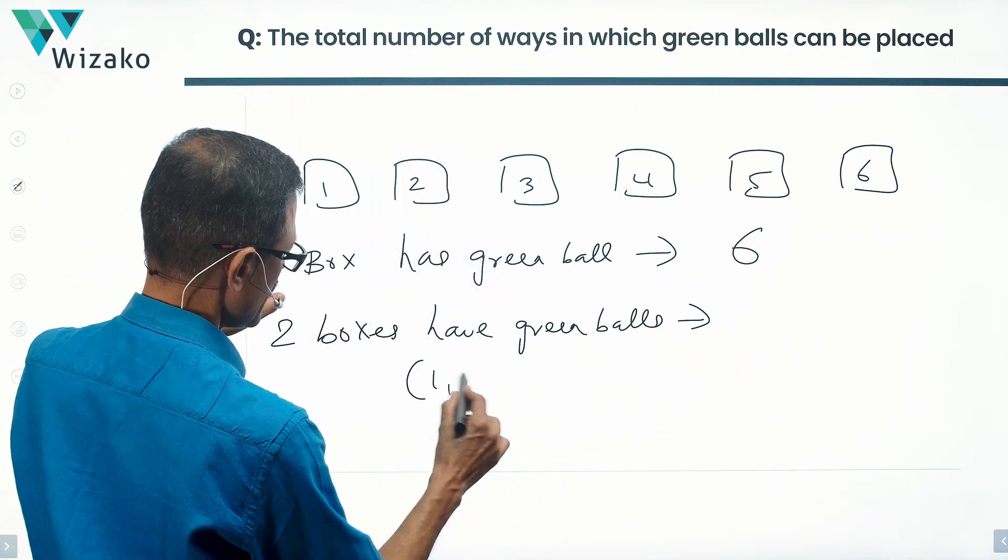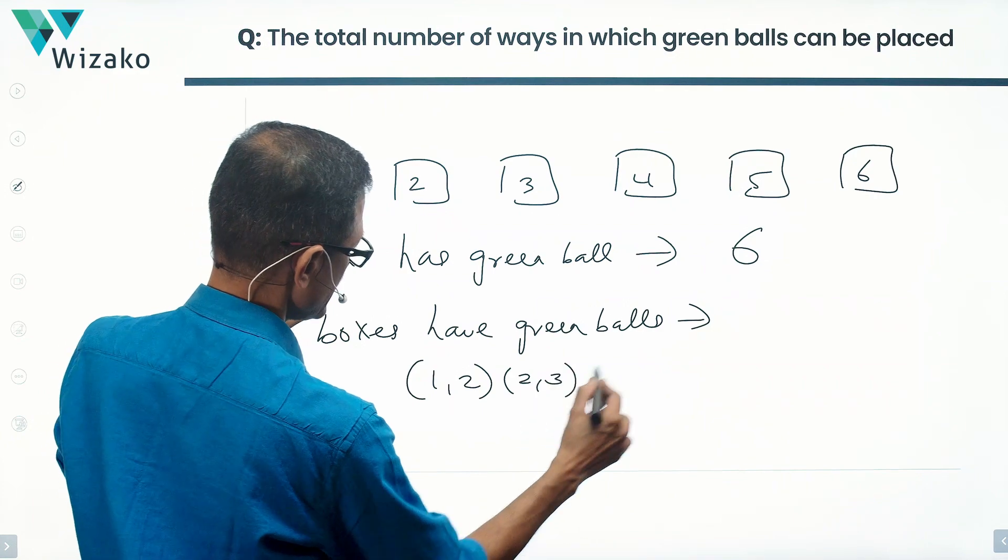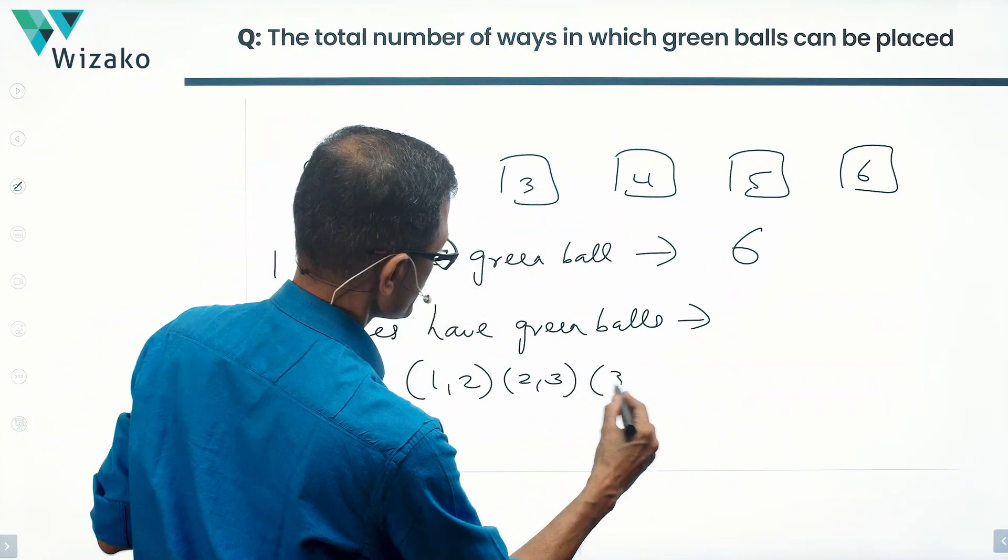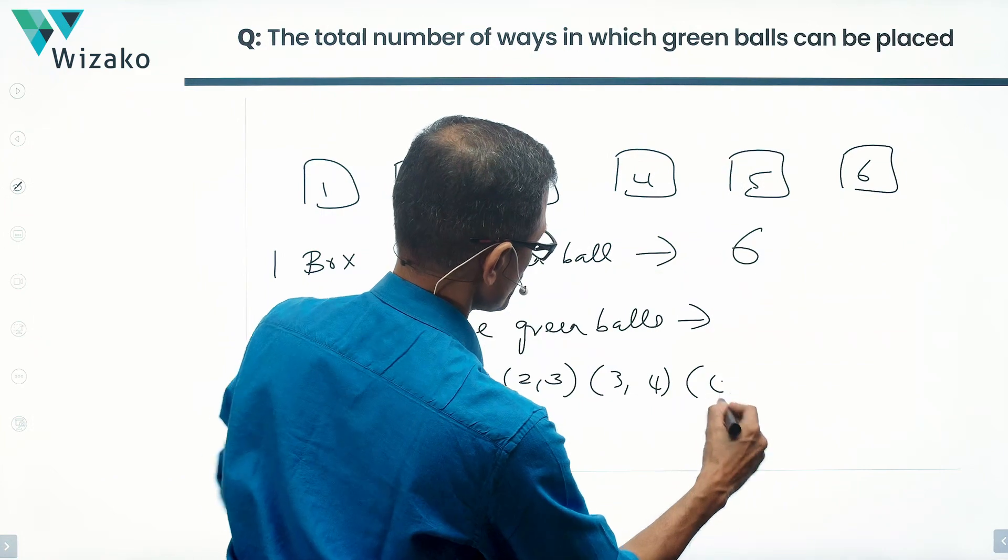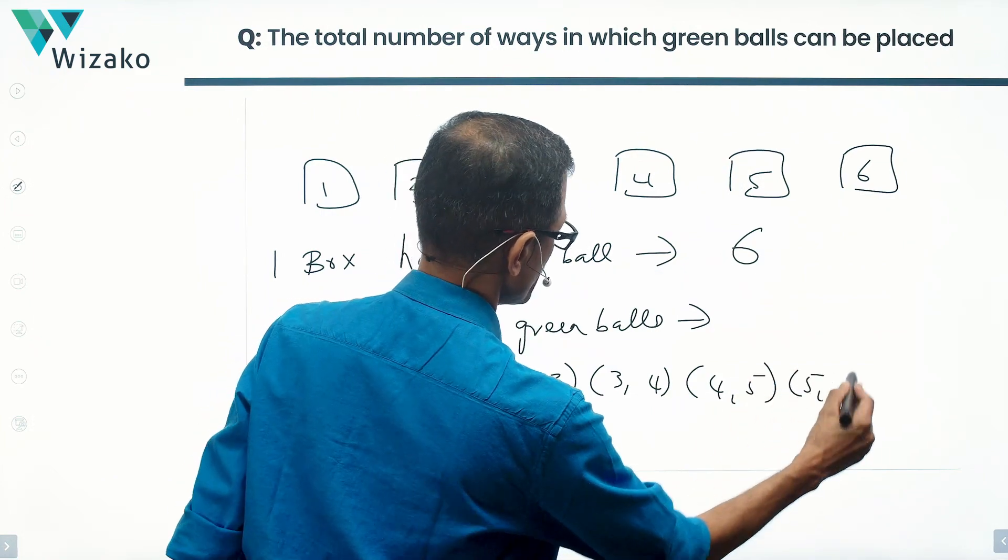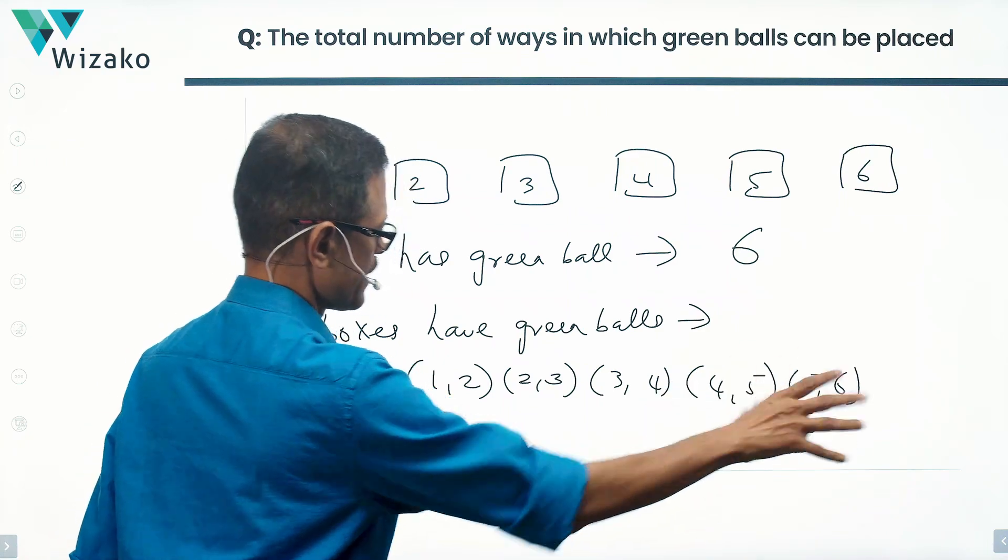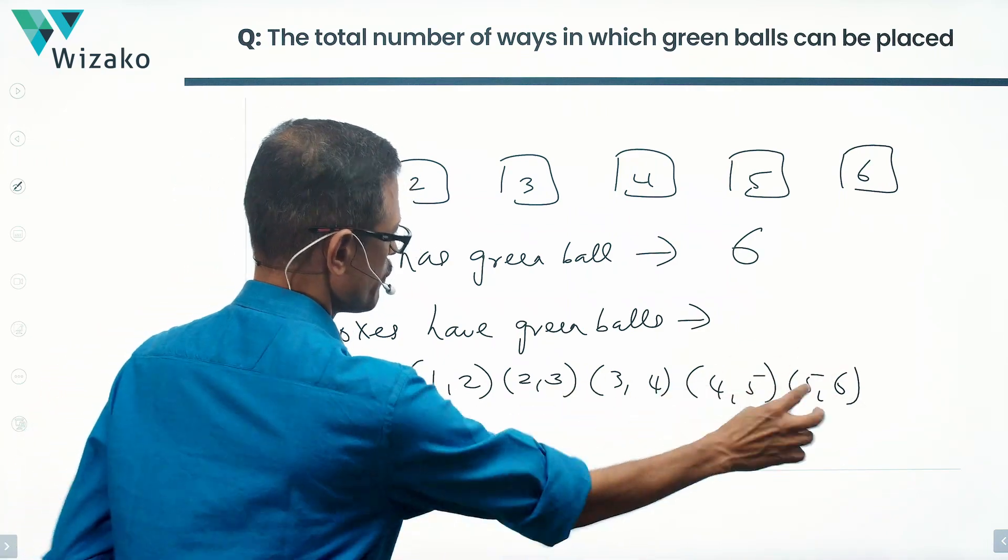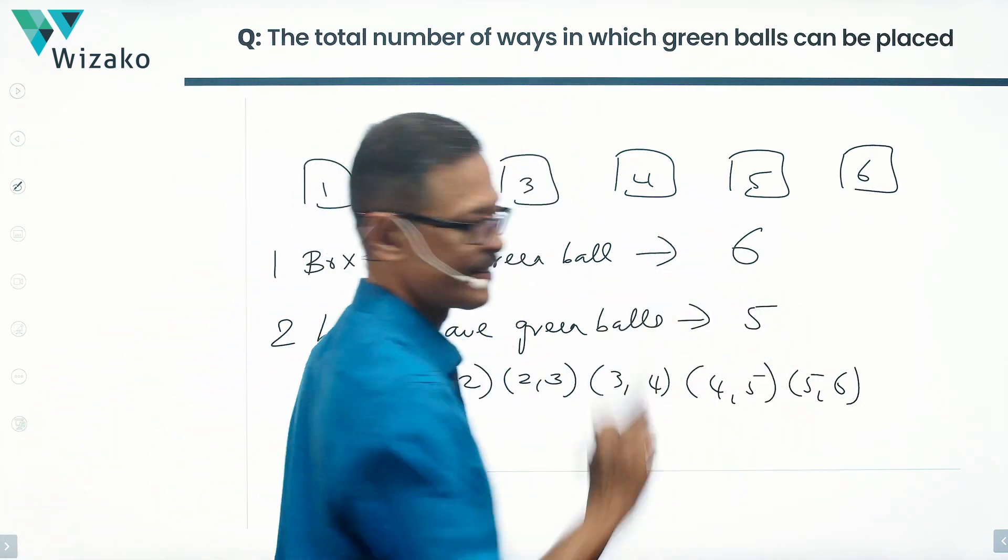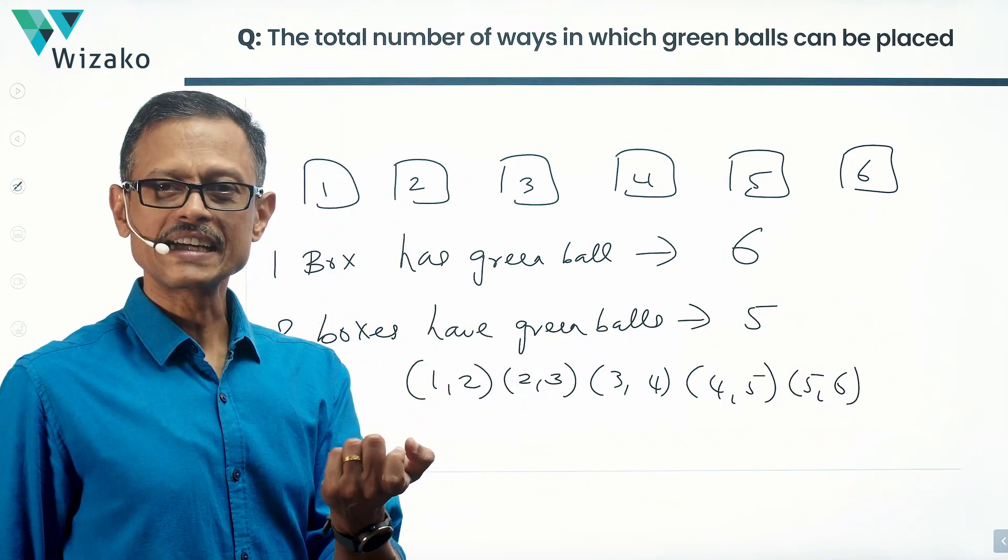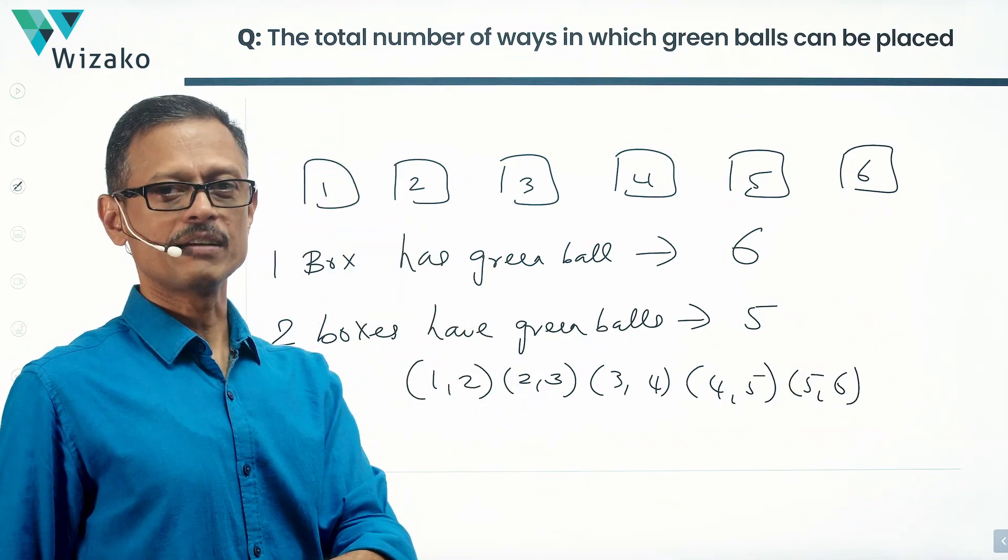So what are the consecutive ones which are possible? Let's list them down again. 1, 2 is a consecutive possibility. 2, 3 is a consecutive possibility. 3, 4 is a consecutive possibility. 4, 5 is a consecutive possibility. 5, 6 is a consecutive possibility. That's it. Nothing else possible. 5 such possibilities exist. Two boxes containing green balls and both those boxes need to be consecutively numbered.